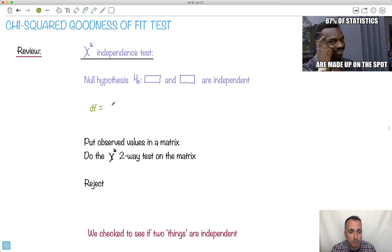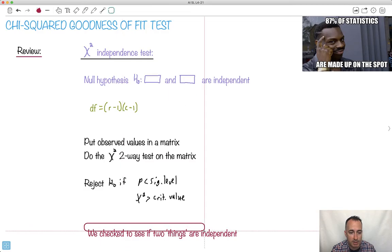Then we would find the degrees of freedom. It helps to memorize this one here, row minus one times column minus one. We would put the stuff into a matrix, do the chi-squared two-way test on that matrix. We checked to see if two things are independent. This is what we mean by chi-squared independence testing.